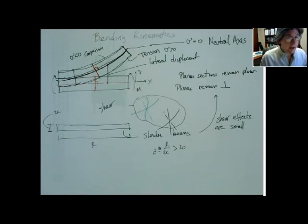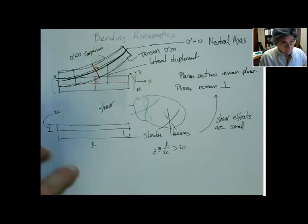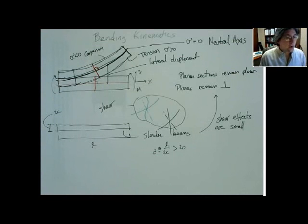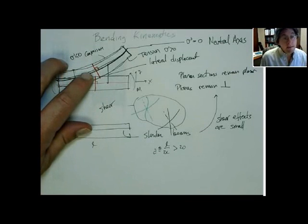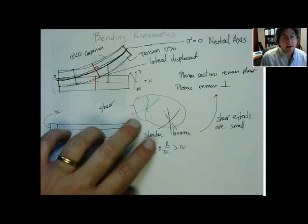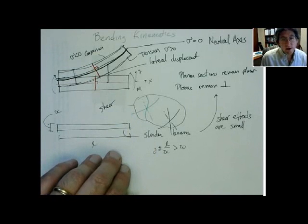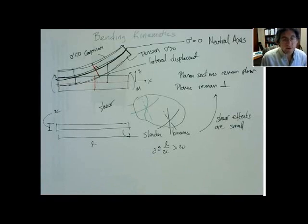Those are the assumptions we're making. Compression on one side and tension on the other means there has to be an axis where there's neither tension nor compression — that's the neutral axis. We assume that planar sections remain planar and perpendicular to that neutral axis. Reality tends to deviate from that, associated with shear phenomena. But when we have very long slender beams with an aspect ratio of 20 or more, we can ignore those shear effects. That's our assumption — let's do some math.